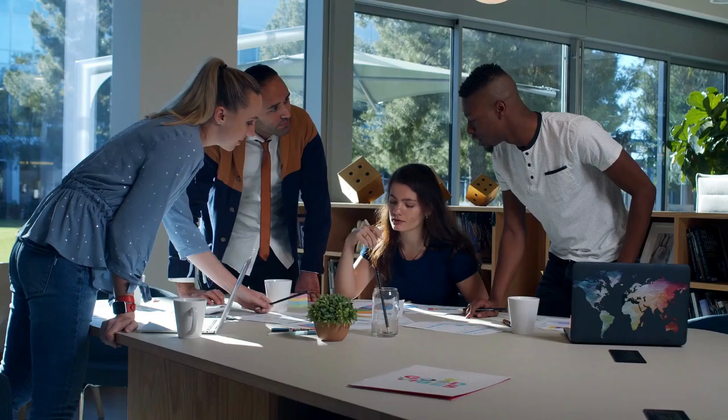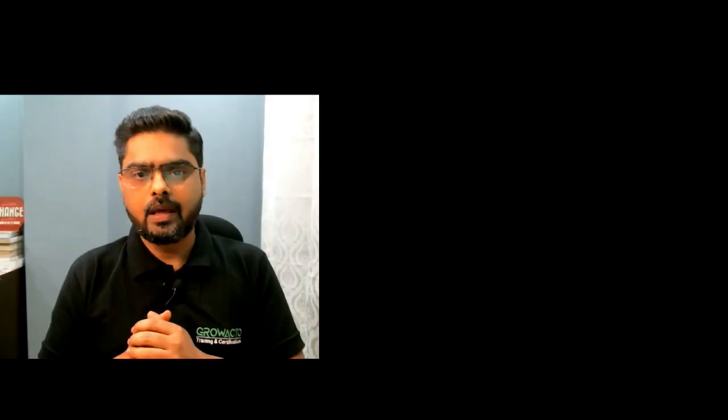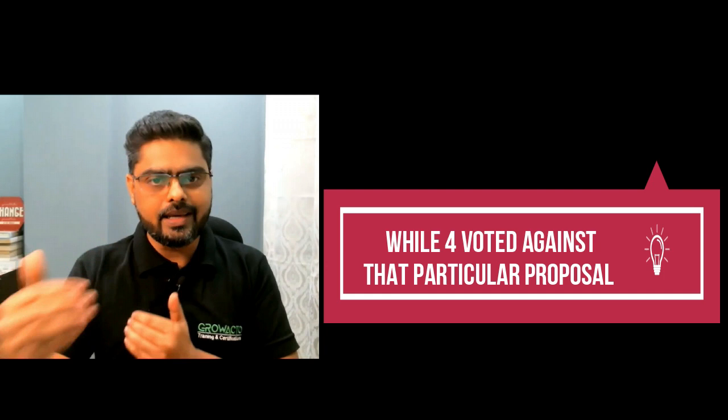Number two is majority. In a group of ten people, six people voted in favor of a particular proposal, while four voted against that particular proposal. Where more than half of the group — six out of ten — are in favor of that particular proposal. This is an example of majority.